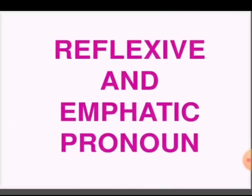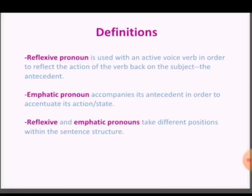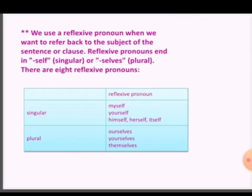Next is reflexive and emphatic pronouns. A reflexive pronoun is used with an active voice verb in order to reflect the action of the verb back on the subject. An emphatic pronoun accompanies its antecedent in order to accentuate its action or state. They take different positions within the sentence and structure. We use a reflexive pronoun when we want to refer back to the subject of the sentence. Reflexive pronouns end in 'self' or 'selves'. There are eight reflexive pronouns: myself, yourself, himself, herself, itself, ourselves, yourselves, and themselves.